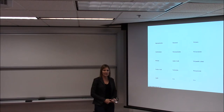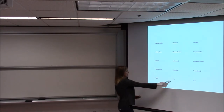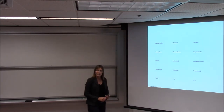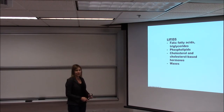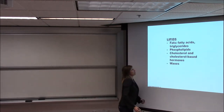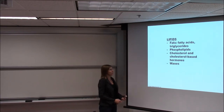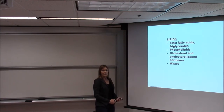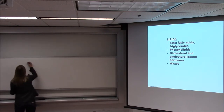We're going through the macromolecules. We've covered carbohydrates; now we're covering lipids. Remember that lipids don't fall into the plan of monomers linking together to form polymers — they're not applicable under both monomers and polymers. This is a partial list of the ones you need to know: fats, which include fatty acids and triglycerides; phospholipids; cholesterol and cholesterol-based hormones; and waxes. They are a very diverse group of molecules.